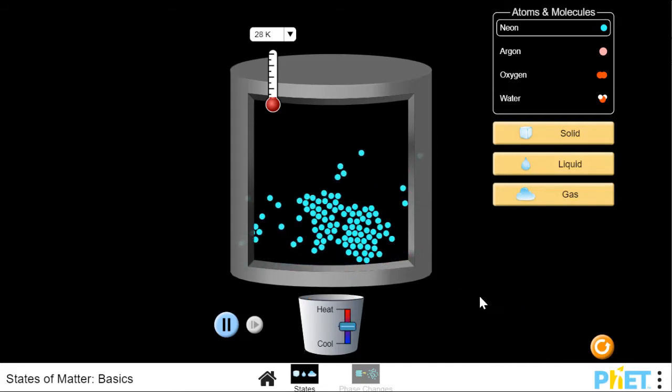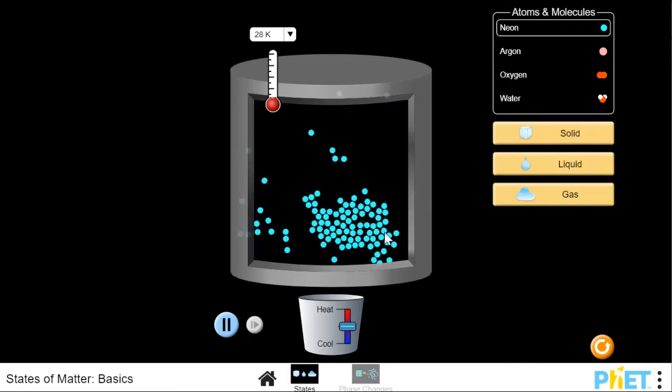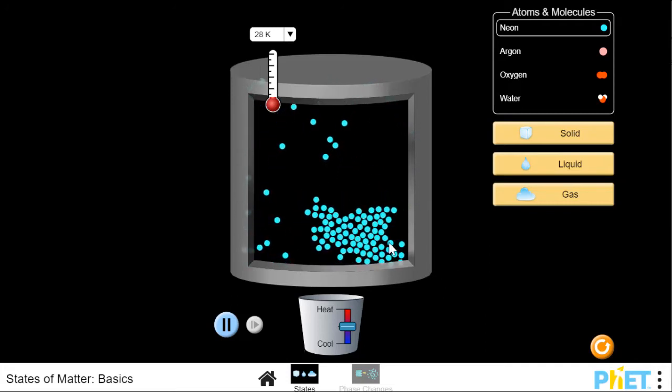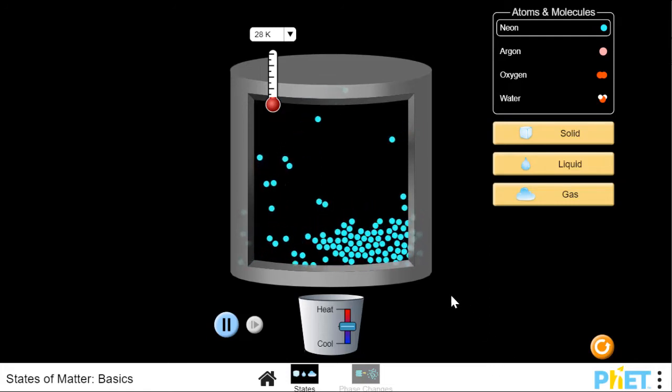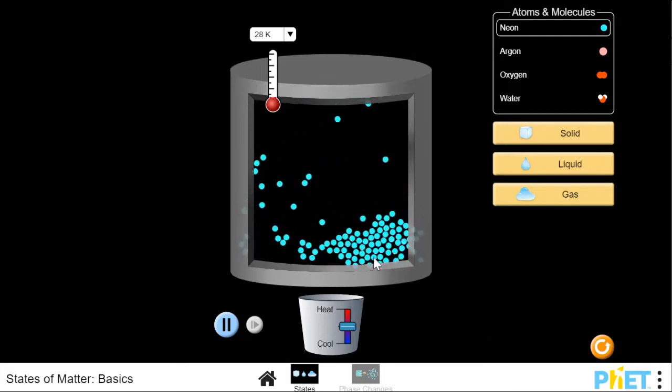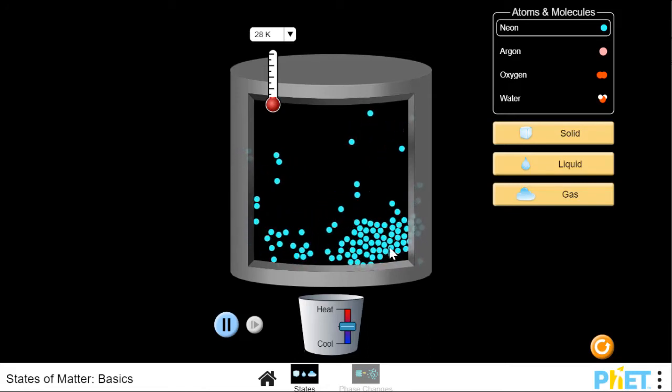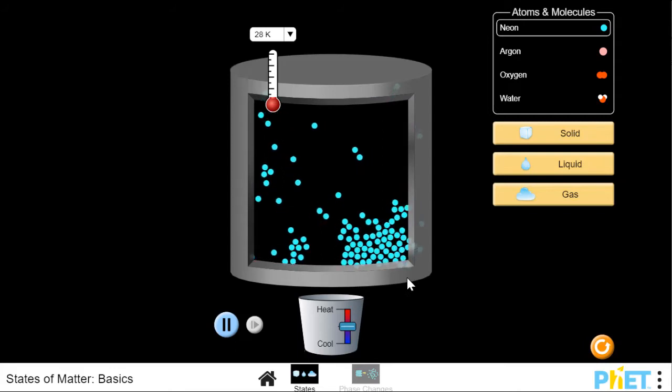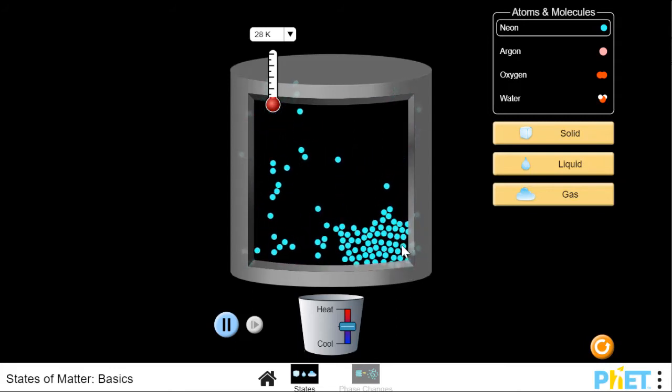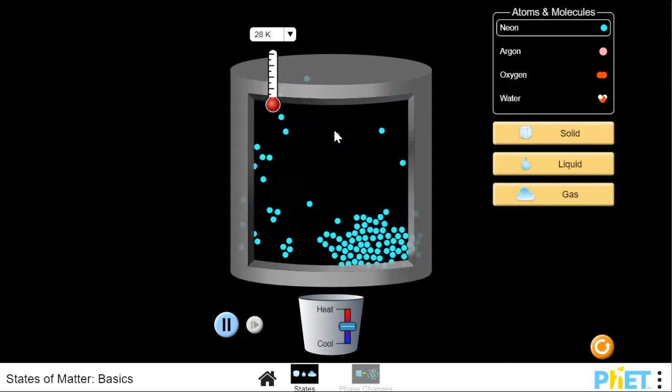So if I raise up my bar and I warm it up, what does it look like happened? They're moving around more. They're taking up more space. Overall it looks like they're kind of taking up the shape on the bottom here. This would give me the impression that I've melted my solid neon into a liquid with a few particles that are acting like a gas.